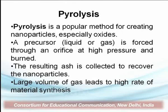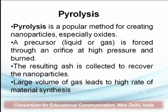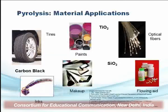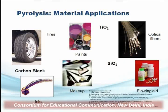The next method is the pyrolysis method, which is a very popular method for creating nanoparticles, especially of oxides. In this method, a precursor — which may be liquid or gas — is forced through an orifice at high pressure and burned. The resulting ash is collected to recover the nanoparticles. Large volumes of gas lead to a high rate of nanoparticle production. Materials prepared by pyrolysis include TiO₂ used in paints, carbon black for tires, and silicon oxide used in optical fibers.